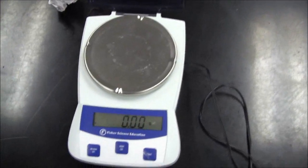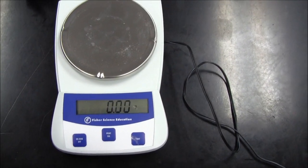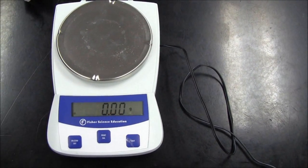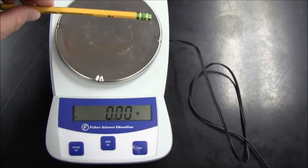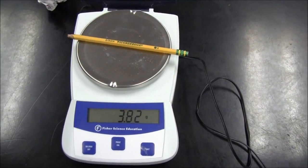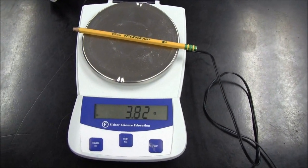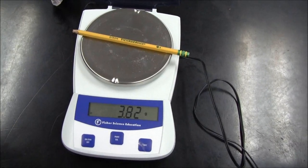All right, this is our mass balance. It has an uncertainty of plus or minus the smallest division, which is 0.01 grams, since it's digital. We'd have to half that if it was analog, of course. All right, and so the mass of my chewed-up pencil is 3.82 grams, plus or minus 0.01 grams. Now, that's the absolute uncertainty, 0.01 grams.